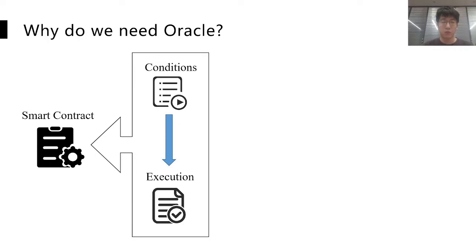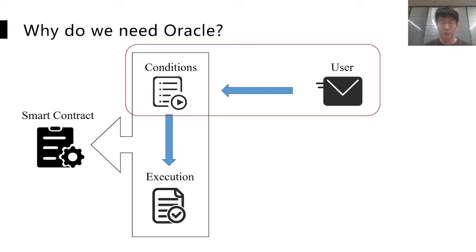Specifically, smart contracts are designed based on Turing-complete programs and can be automatically executed when certain conditions are satisfied. If a user wants to trigger the execution of smart contracts, it is required to send the evidence to the smart contracts via a transaction. Once the transaction is received, the smart contracts will begin to verify whether the conditions are satisfied. If they are, it will begin to automatically execute the following function defined in the smart contract. Smart contracts are published in the blockchain network so that every user could verify the correctness, and the security of smart contract-based applications can be guaranteed.